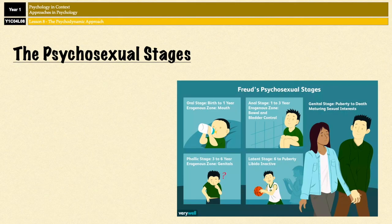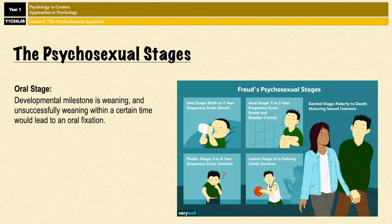Some of these stages and conflicts are fairly self-explanatory. For example, the oral stage — the developmental milestone is weaning, and not successfully weaning within a certain time would potentially lead to an oral fixation. Or if you take the anal stage, the developmental milestone is potty training, and if you don't potty train within the given time frame, it can lead to people being overly messy or overly neat when they're adults, and that's known as being anally retentive.